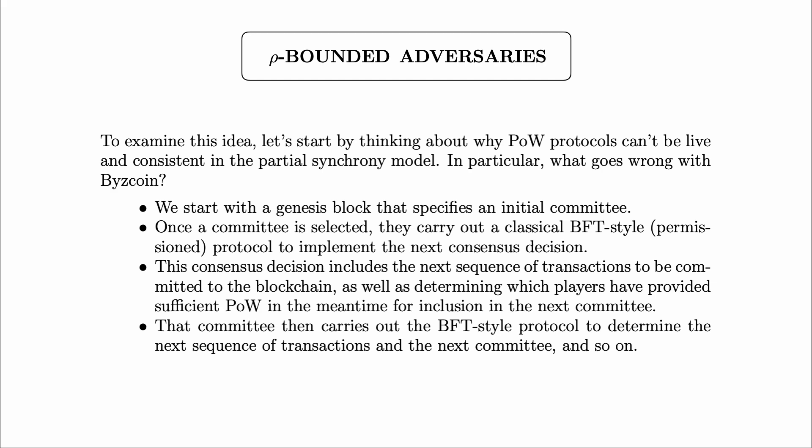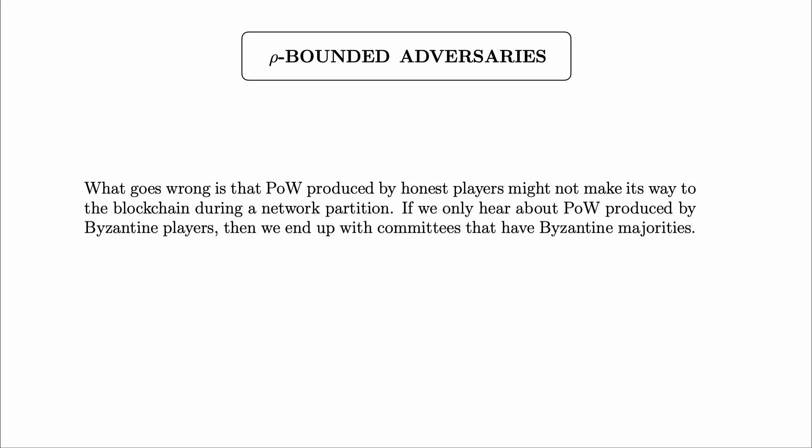It's interesting to ask: what goes wrong if we try executing such a protocol in partial synchrony? On the face of it, it seems like it might be fine, because BFT-style protocols can certainly be live and consistent in partial synchrony. We're just executing one BFT-style protocol after another. What goes wrong is that the proof-of-work produced by honest players might not make its way to the blockchain during a network partition. Maybe honest players are producing lots of proof-of-work, but if we don't hear about it and only hear about proof-of-work produced by Byzantine players, we might end up with committees that have Byzantine majorities.